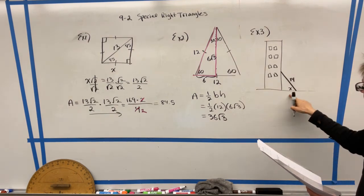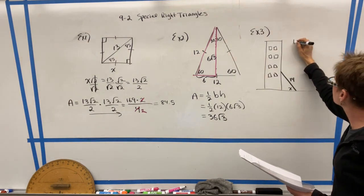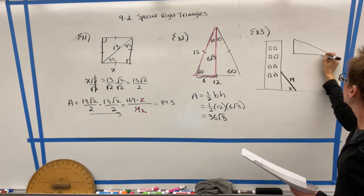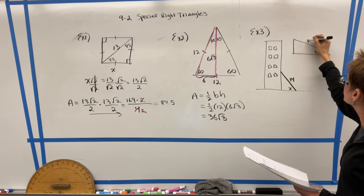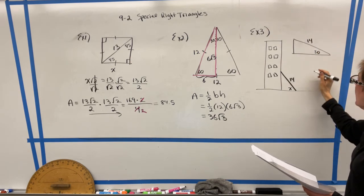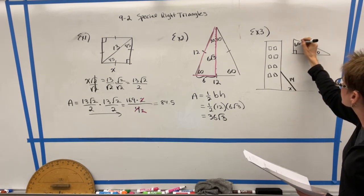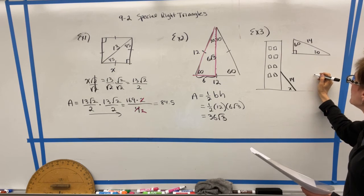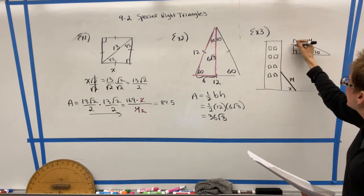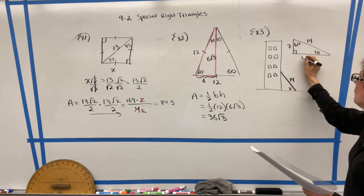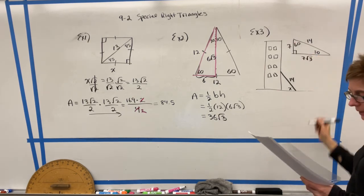So let's kind of blow up this part of the picture. And again, this was not drawn to scale. But if that is 30 degrees and that is 14, I know that this is a 30, 60, 90. Now, if my hypotenuse is 14, the short leg is going to be half of that amount, or 7. And then the long leg would be 7 radical 3.